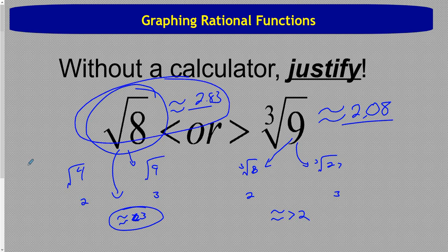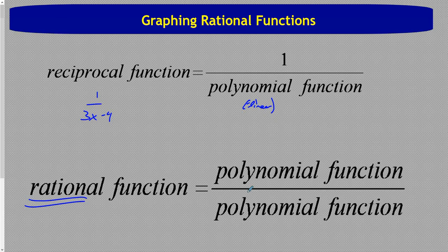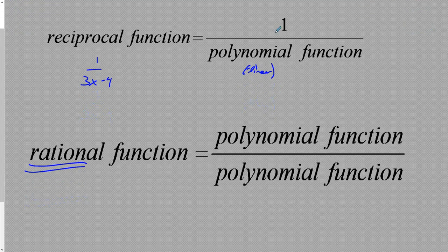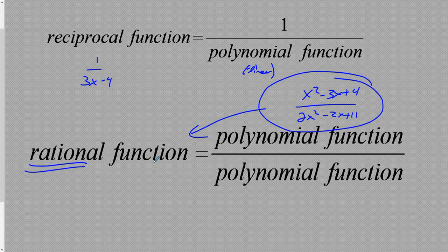So obviously the square root of 8 is bigger. It just goes to show that you can do more complex math in your head by changing the problem to something you can work with, like comparing to perfect squares or perfect cubes. That's the warm-up. A reciprocal function is 1 over a polynomial function — usually linear — like 1 over 3x minus 4. A rational function is a polynomial function divided by a polynomial function, and these do not have to be linear, though they can be. Something like x squared minus 3x plus 4 divided by 2x squared minus 2x plus 11 is an example of a rational function.